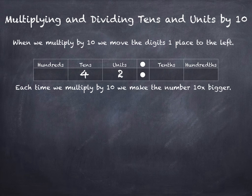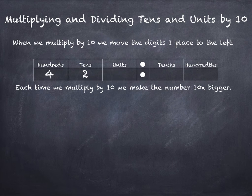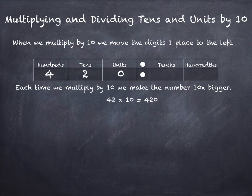So we're going to multiply 42 by 10 by moving those digits one place to the left. There's the 4 one place and there goes the units. We fill in the units column with a zero placeholder, and we can see that 42 times 10 is 420.